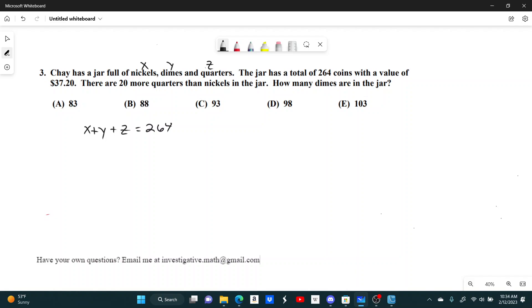The value is $37.20. The value of nickels will be 0.05 times x. The value of dimes will be 0.1 times y. The value of quarters will be 0.25 times z. And altogether, that equals $37.20.